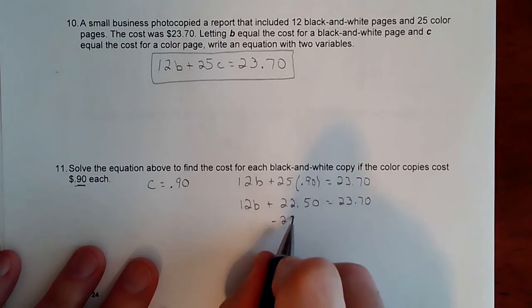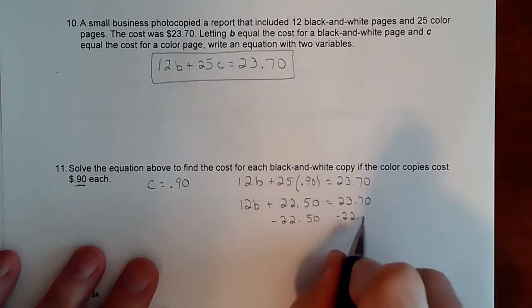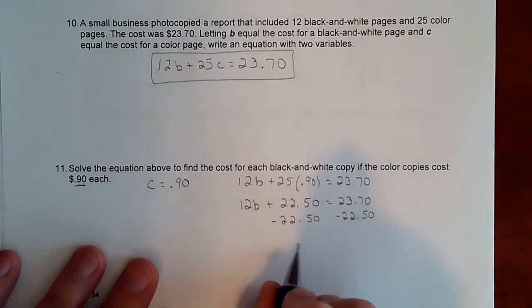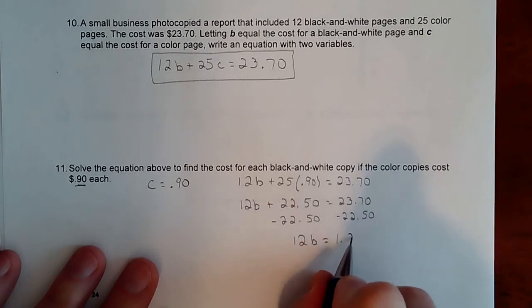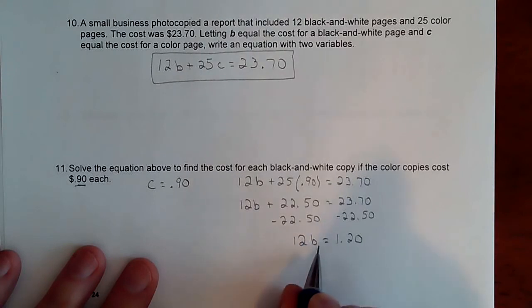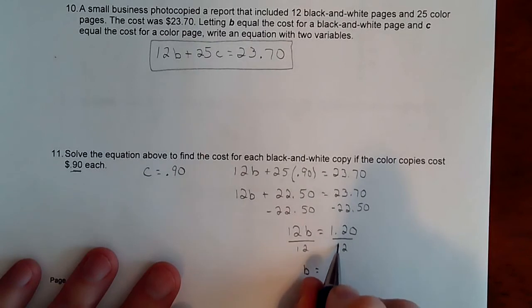So we'll subtract that over to try to isolate the B. 22.50. All right. So 12B. So this is going to represent what's left for the cost of the black and white. So it's $1.20 if you subtract those. So it costs $1.20 for 12 copies. So how much does each copy going to cost? We'll divide by 12, divide by 12.